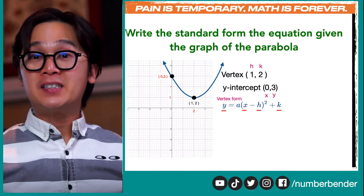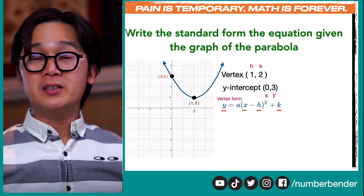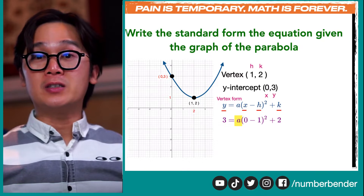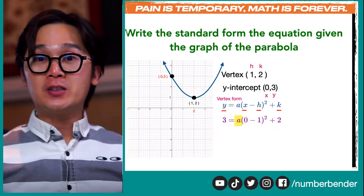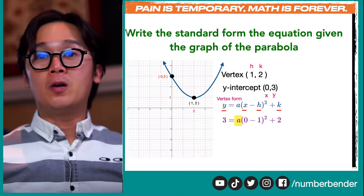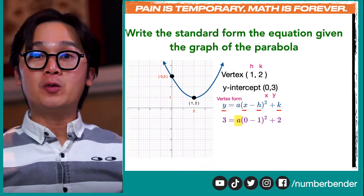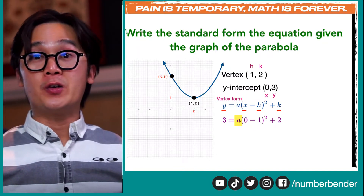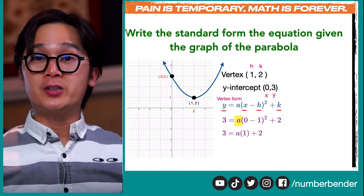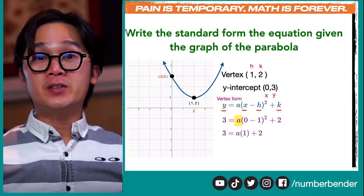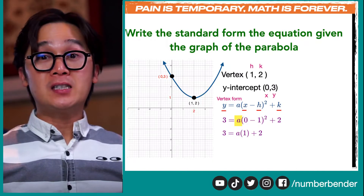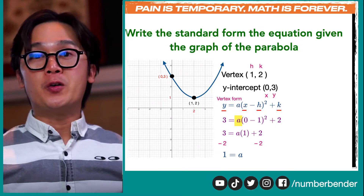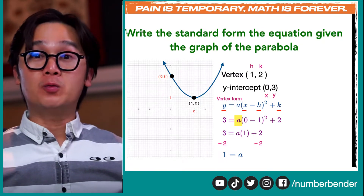Now that we have two points, we're ready to use the vertex form because we have the vertex and a point on our parabola. By replacing h, k, y, and x with their corresponding values, we are left with finding the value of a. Substituting: 0 minus 1 is negative 1, and negative 1 squared equals 1. So we have 3 equals a times 1 plus 2. Subtracting 2 from both sides, a is equal to 1.